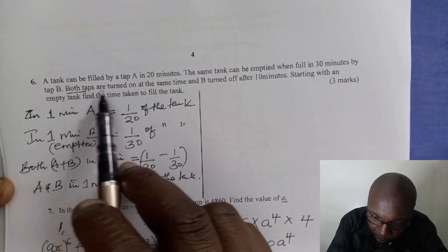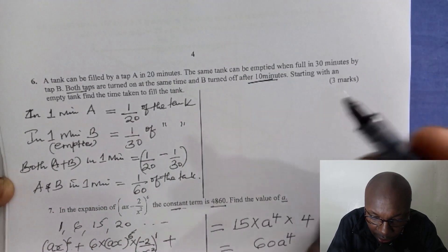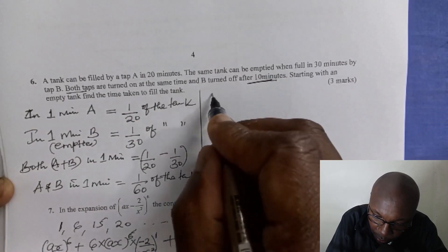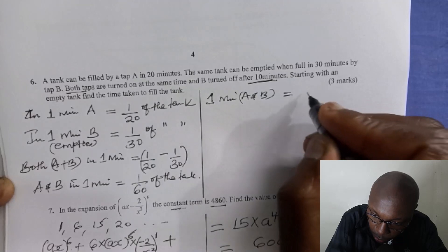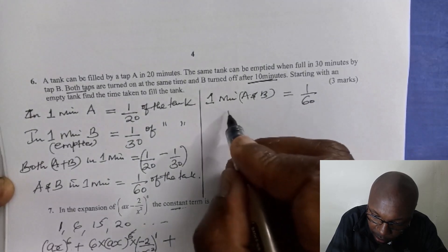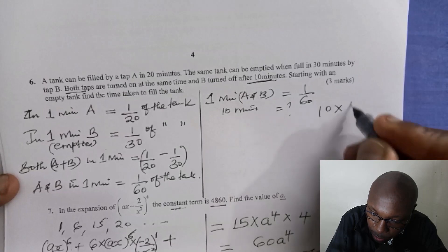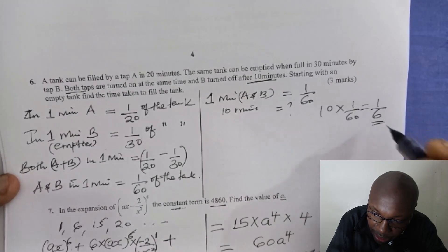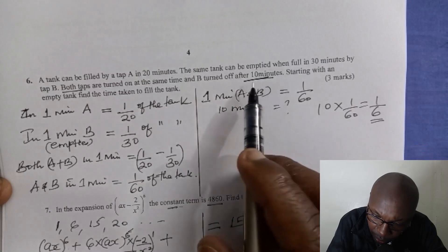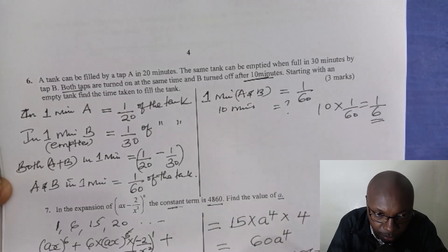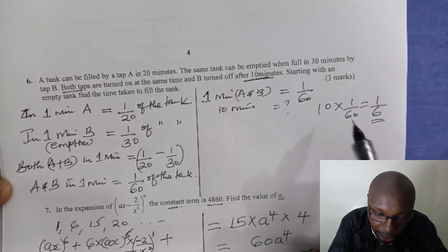We are told both taps are turned on at the same time and B is turned off after 10 minutes, meaning the two taps A and B are running together for 10 minutes. If in one minute A and B fill 1 over 60 of the tank, what about in 10 minutes? We cross multiply: 10 multiplied by 1 over 60 gives 1 over 6 of the tank. So both A and B, when running together for 10 minutes, will fill a sixth of the tank.